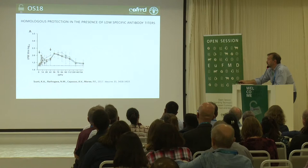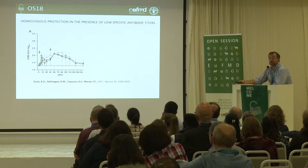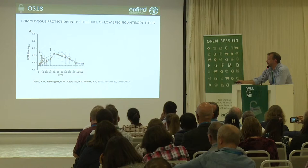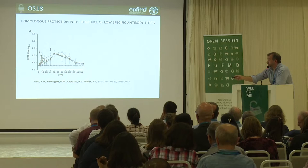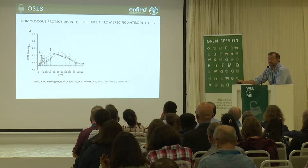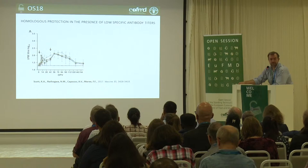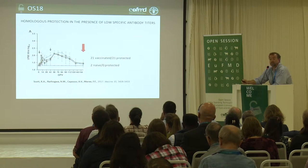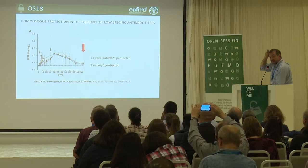But what happens when you challenge animals that do not have really protective levels of antibodies? This is work done by people in South Africa. Three groups of vaccinated cattle and naive ones — each group has seven animals — were challenged after two vaccinations, about 162 days after primary vaccination. You get the infection, and you get all animals protected.